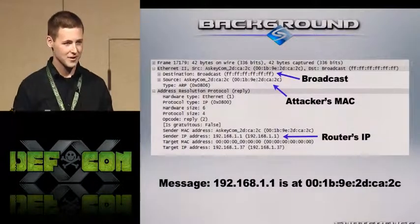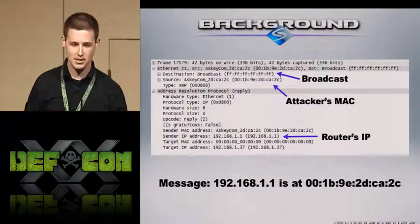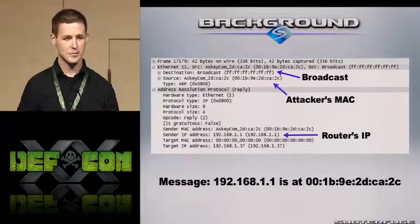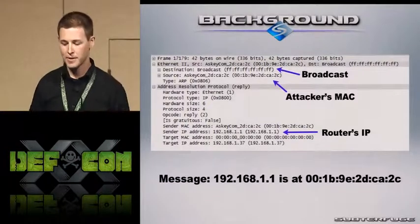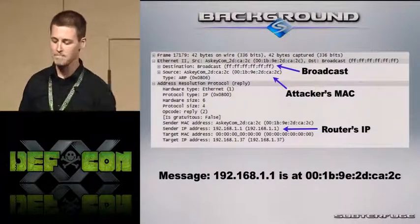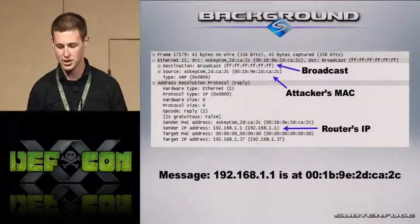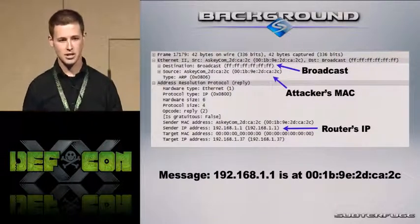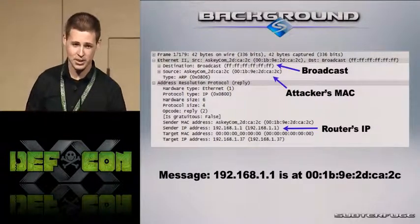We're going to go high speed on this because it's not a new attack. Here is an example of a poison packet that Subterfuge sends out. At the top, it's being sent to the broadcast MAC address — so every single device on the network receives this packet. Below that is the attacker's MAC address. In the ARP reply area, the router's IP address is actually spoofed in here. This packet goes out and says, 'Hey, I'm really from the router, but this is my MAC address,' so it updates all the ARP tables on the victim's client machines.